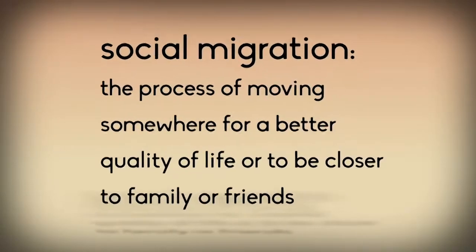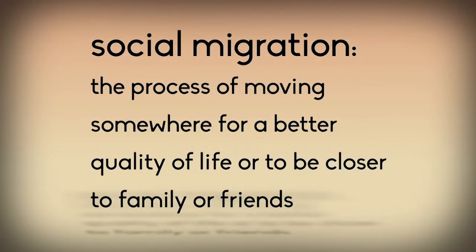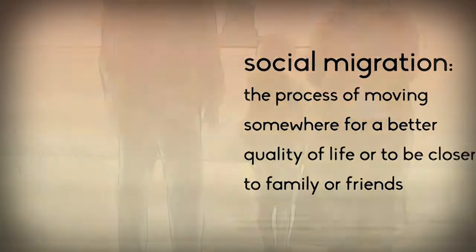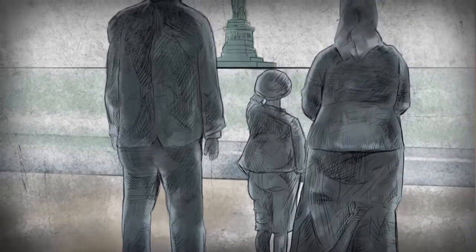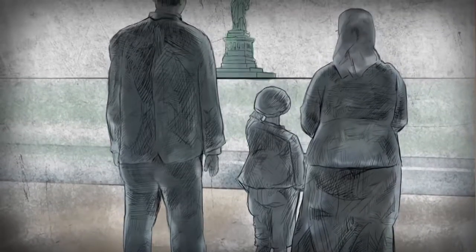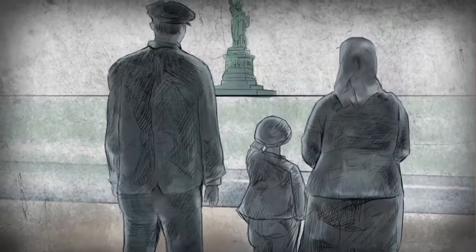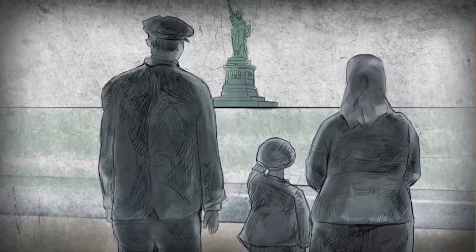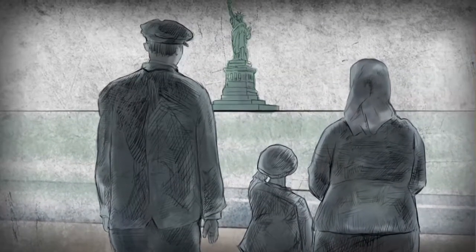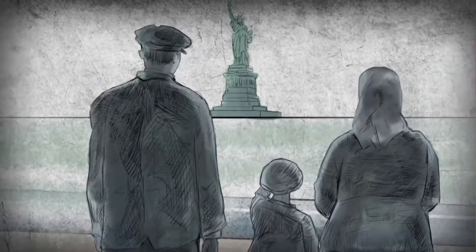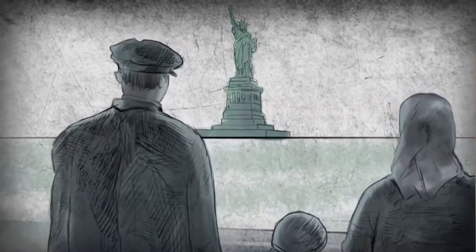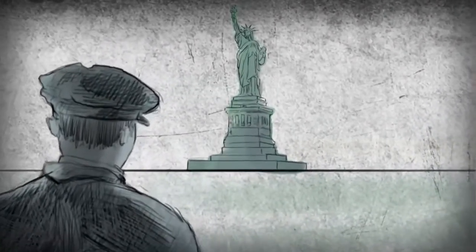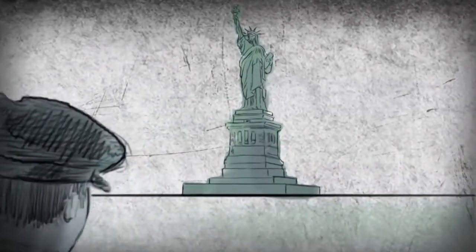Social migration is moving somewhere for a better quality of life or to be closer to family or friends. Many immigrants have come to the United States to be with family. Because it includes people of so many different backgrounds, the United States is known as a melting pot. More than 12 million immigrants entered the country from 1892 to 1954 through Ellis Island.